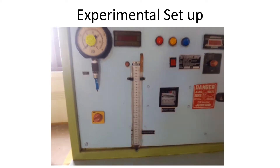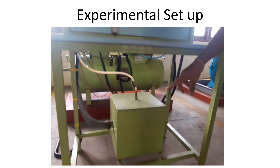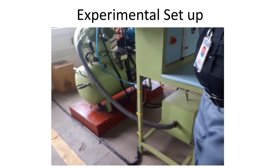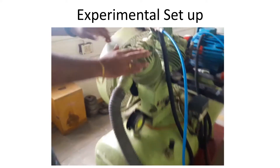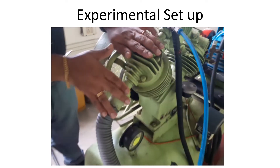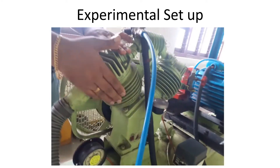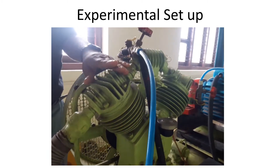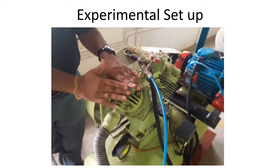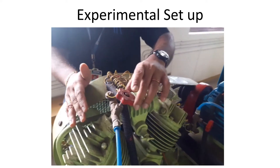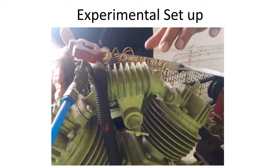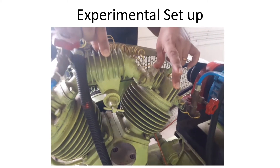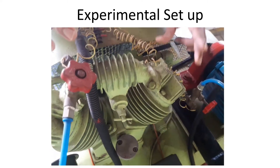Air from the storage tank is delivered to the low pressure cylinder through this valve, and it gets compressed there. We all know that at the time of compression, pressure and temperature will increase. To reduce the temperature developed in the air, an intercooler is provided. Then that air is again compressed with the help of the high pressure cylinder. By using this intercooler, the isothermal efficiency of the compressor can be improved.